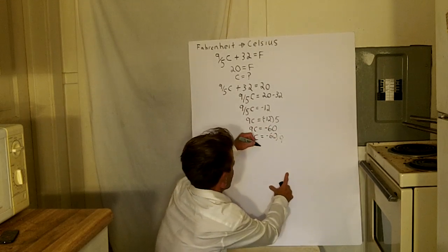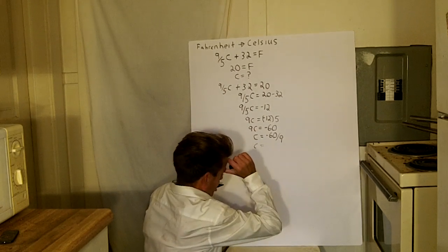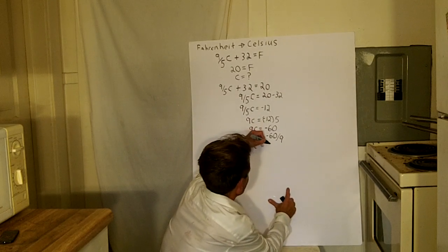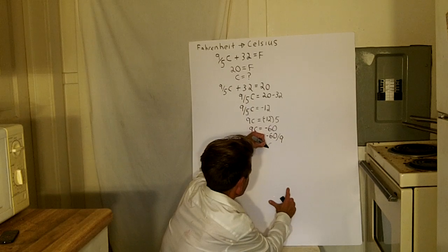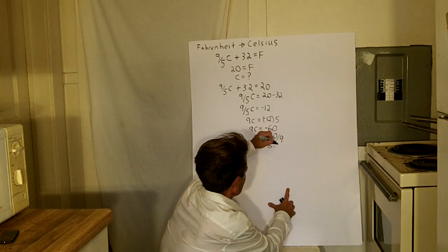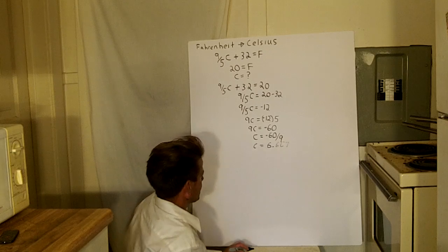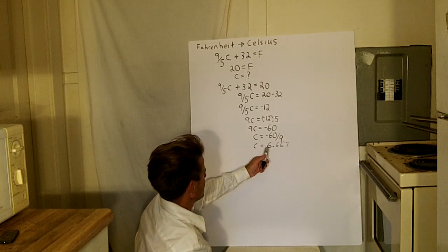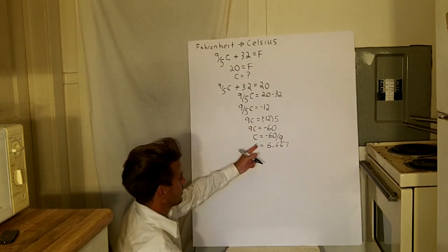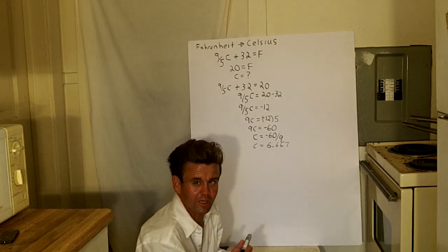So C equals negative 60 divided by 9, which is approximately negative 6.667. So negative 6 degrees Celsius is equal to 20 degrees Fahrenheit — or roughly negative 6 to negative 7 degrees.